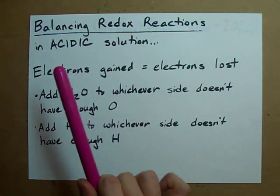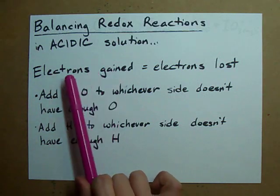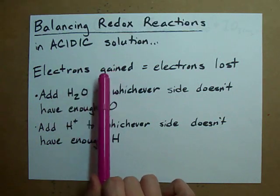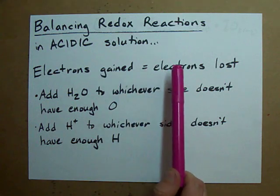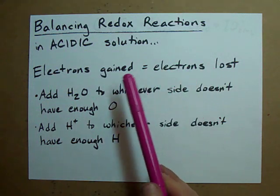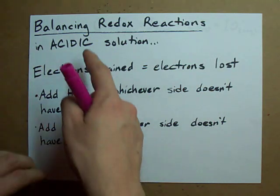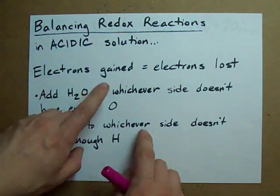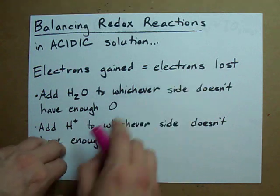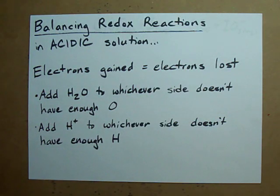What I need you to remember is that the electrons gained in one half of the reaction have to be the same as the electrons lost in the other half. You can't create or destroy electrons. There has to be a balance. Balancing. Electrons gained has to be the same as the electrons lost. I'll show you how to do that.